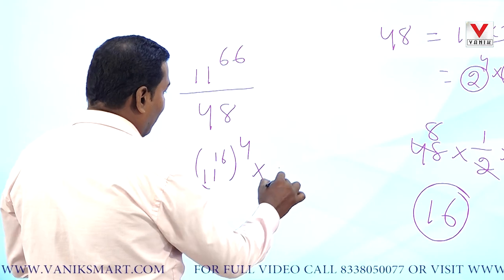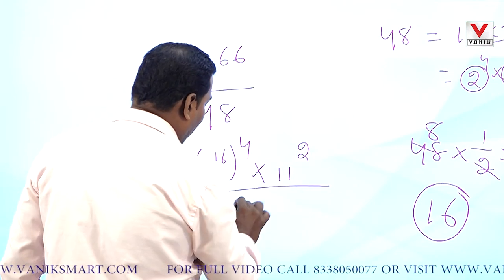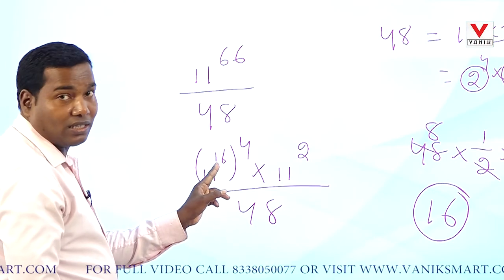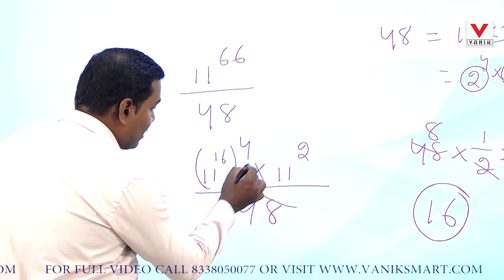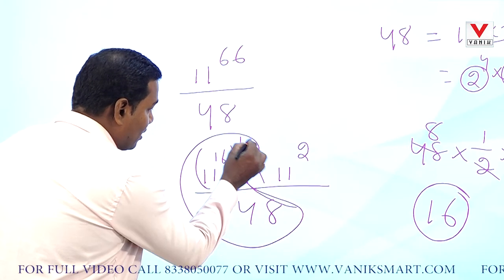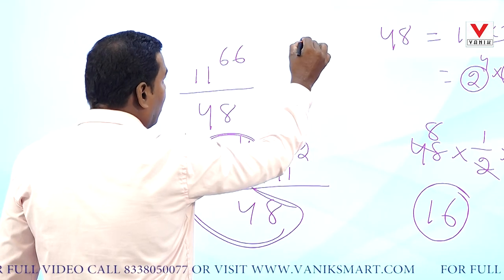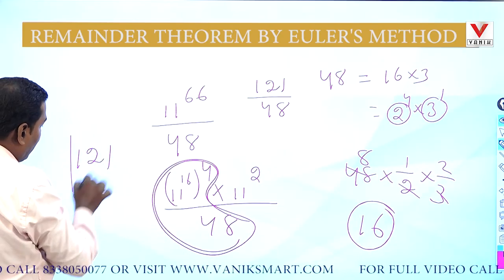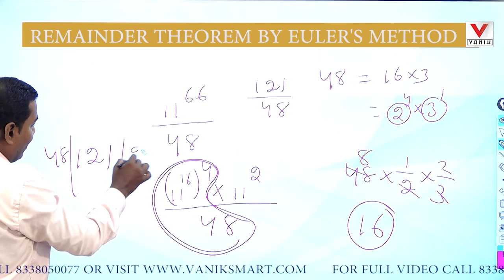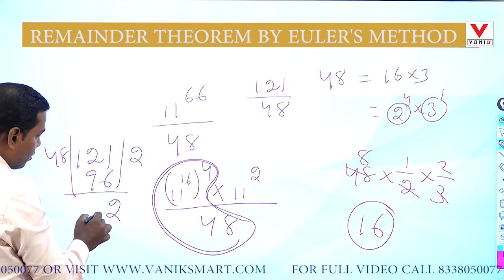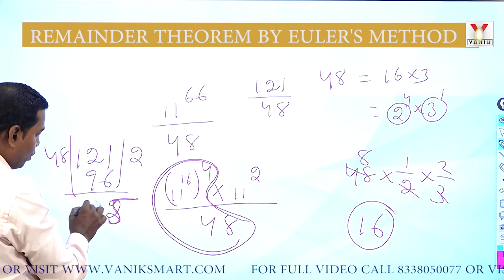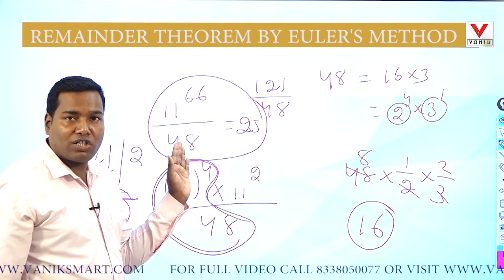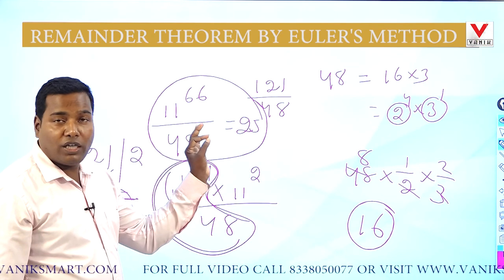I write 11⁶⁶ as (11¹⁶)⁴ × 11², divided by 48. Since 11 and 48 are co-prime and 16 is the Euler's number of 48, the remainder of (11¹⁶)⁴ divided by 48 is 1. The remaining part is 11² = 121 divided by 48. 48 × 2 = 96, and 121 − 96 = 25. So the remainder of 11⁶⁶ divided by 48 is 25.